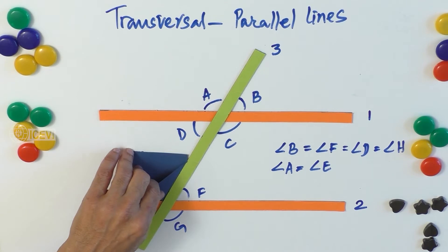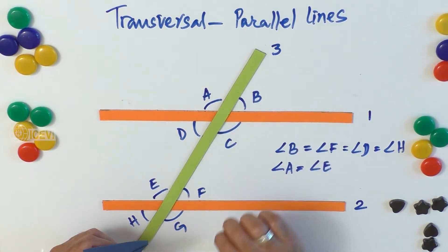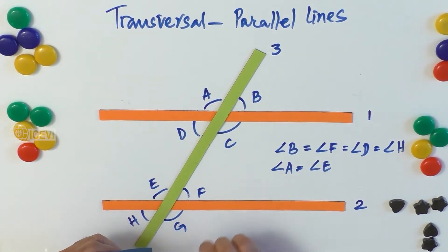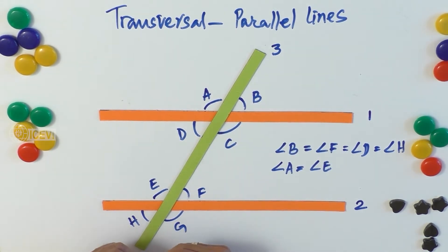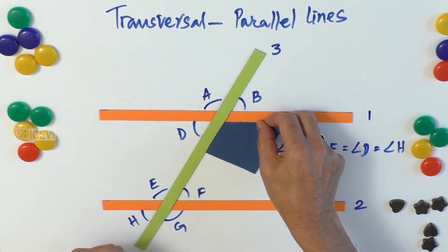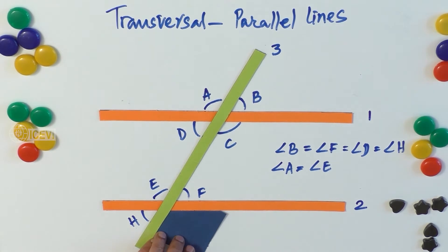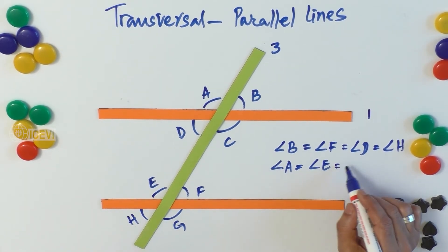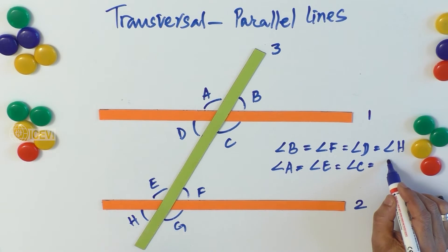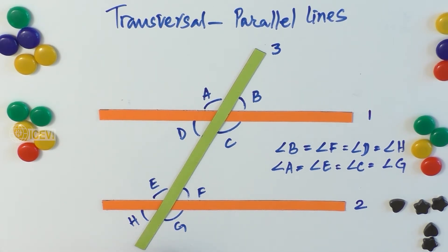Angle A and angle C are vertically opposite angles. Whether lines are parallel or not, intersecting lines always have equal vertically opposite angles, so A equals C. Therefore, angle A equals angle E, and A equals C, which is also equivalent to angle G. So angle A equals angle E equals angle C equals angle G.